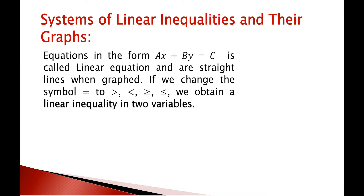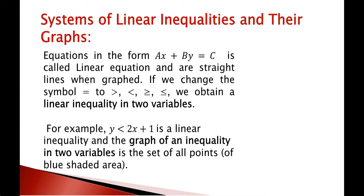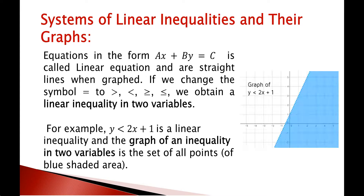An equation of the form AX plus BY equals C is a linear equation, and when graphed, it gives you a straight line. Now if we change the equal symbol by any one of these four inequality symbols — greater than, less than, greater than or equal, or less than or equal — then we obtain a linear inequality in two variables. For example, Y less than 2X plus 1 is a linear inequality. The graph of an inequality in two variables is the set of all points. In this picture, we can see the graph of Y less than 2X plus 1 as the blue shaded region. Any point situated in this blue shaded area is a solution of this linear inequality.